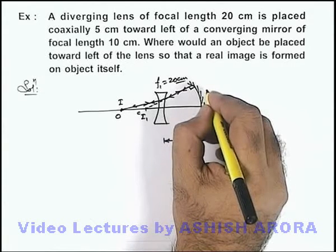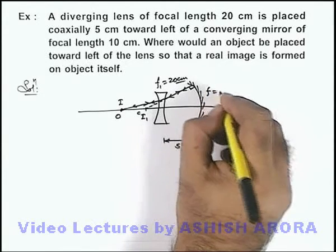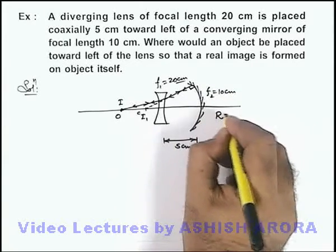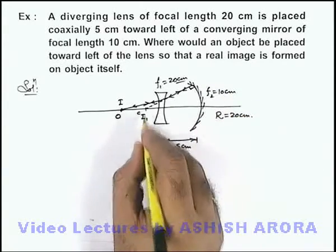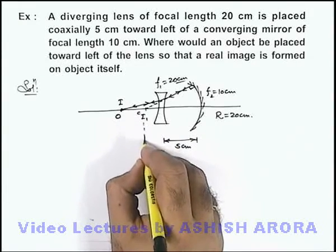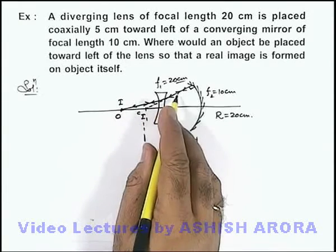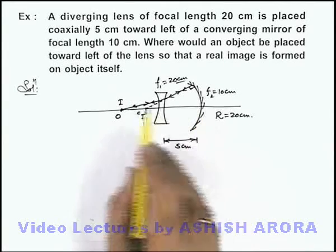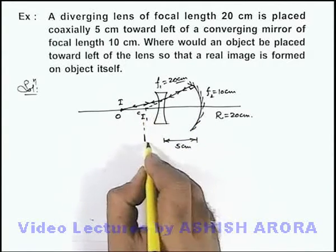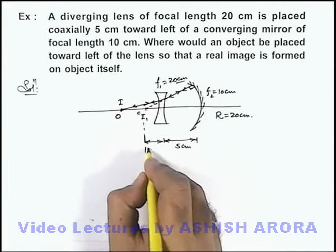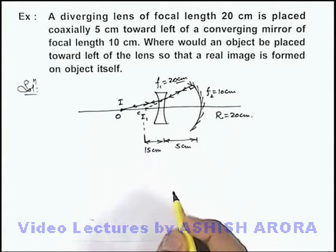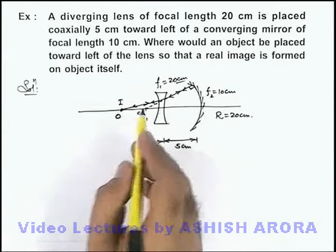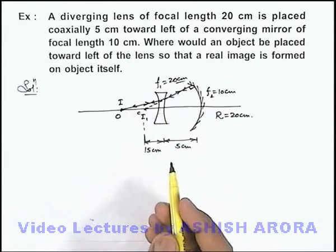As we are given that the focal length of the mirror is 10 centimeters, we can directly write its radius of curvature will be 20 centimeters. So this point where the image is produced after refraction through the lens must be located at a distance of 20 centimeters from the lens, that means if this is 5 centimeters, this distance must be 15 centimeters. Diagrammatically it is not proper, but mathematically we can see that this point must be the center of curvature.